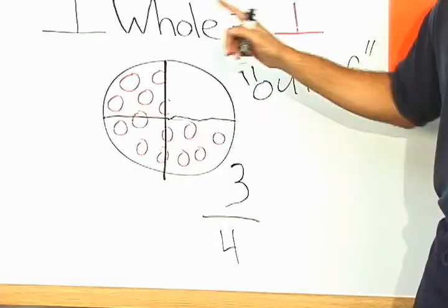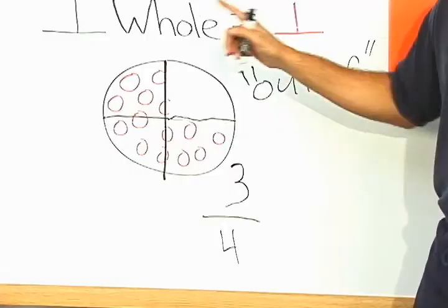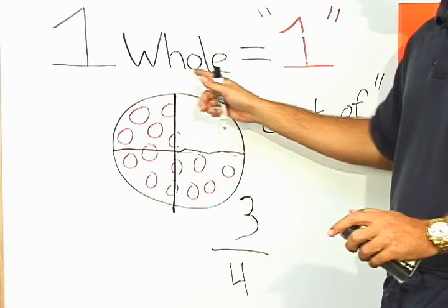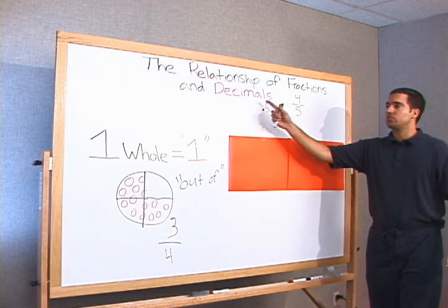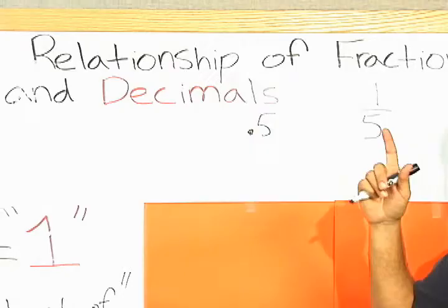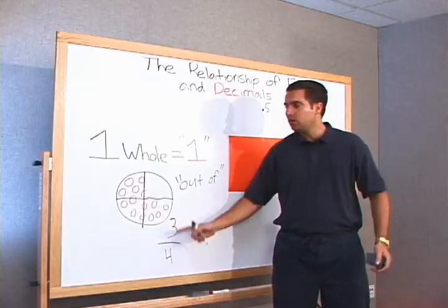Now that is the key, knowing that we do not, I repeat, do not have one whole pizza. That's where we start dealing with fractions and decimals, because we no longer have one whole.